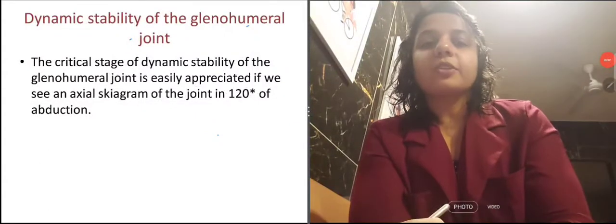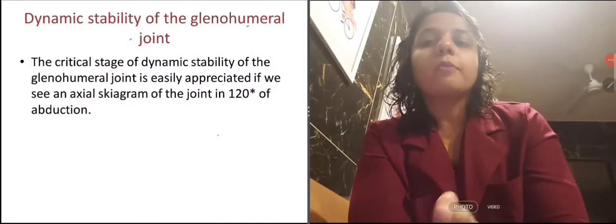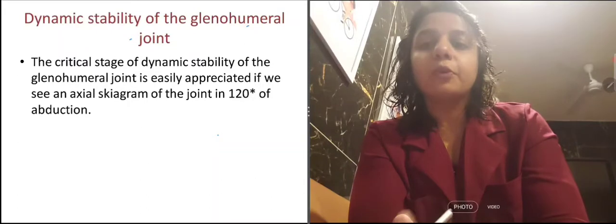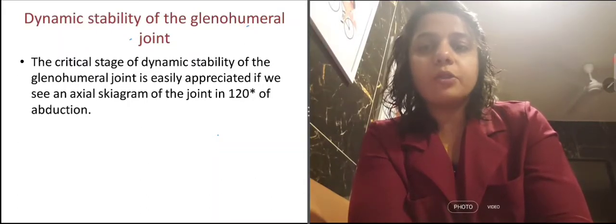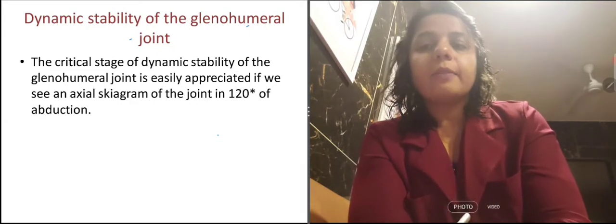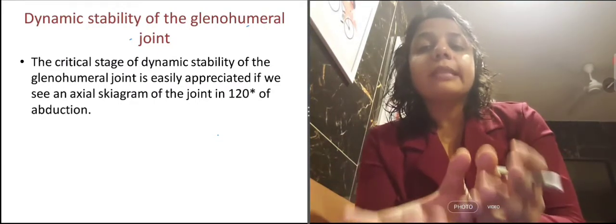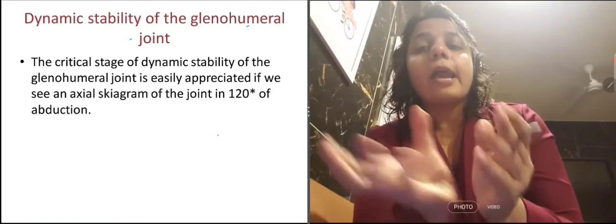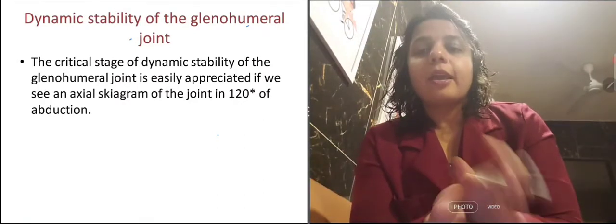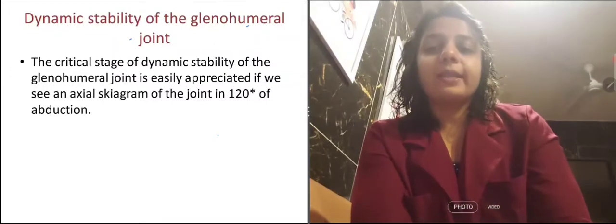This is Dr. Sheenam Bansal. Today we will talk about dynamic stability of the glenohumeral joint. The glenohumeral joint — that is the shoulder joint — is very unstable, as there is less glenoid area and more humeral head. The depth of the socket is also very less.